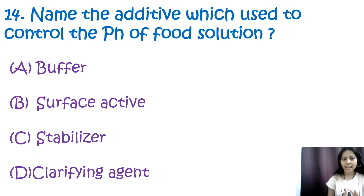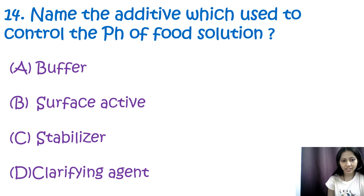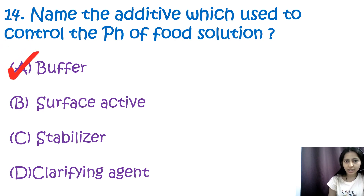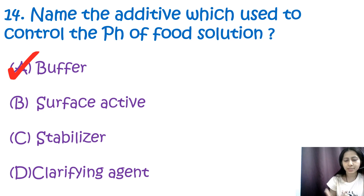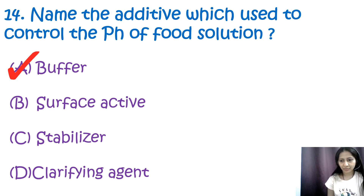Question 14: Name the additive used to control the pH of a food solution. Options are buffer, surface active agents, stabilizers, and clarifying agent. The correct answer is A, buffer. Buffers are used to control the pH of a food solution. They can alter and control the acidity and alkalinity of food at a specific level important in processing, taste, or food safety.